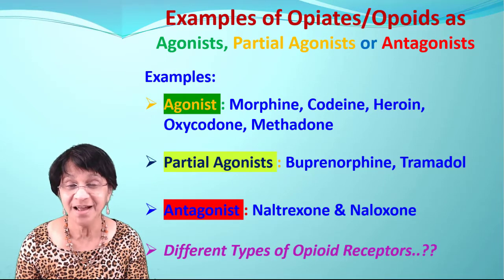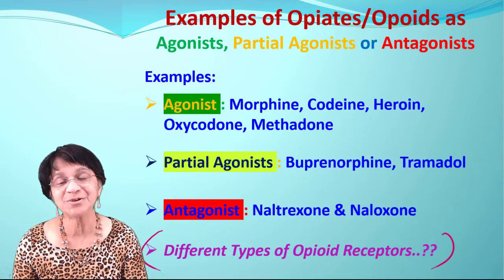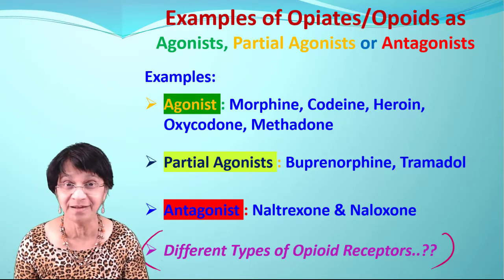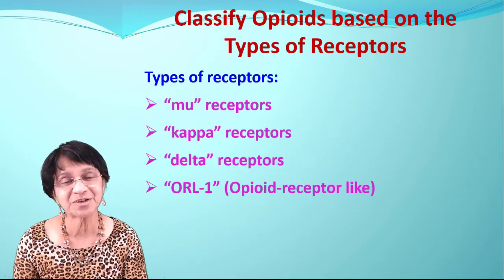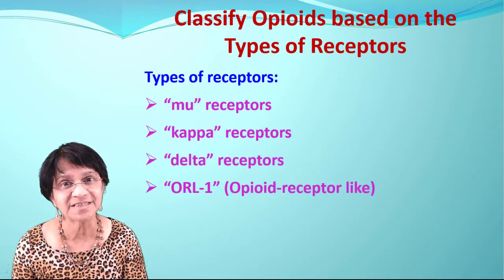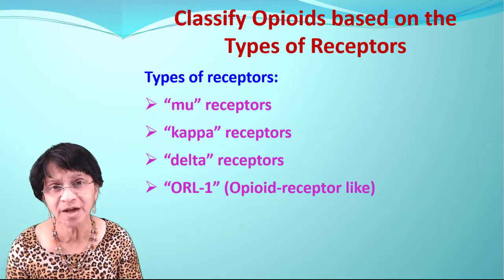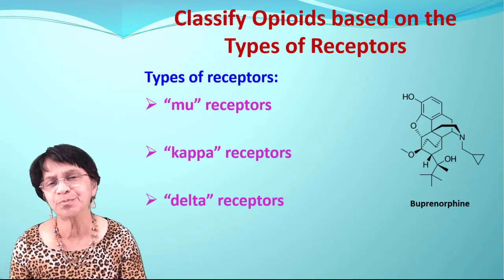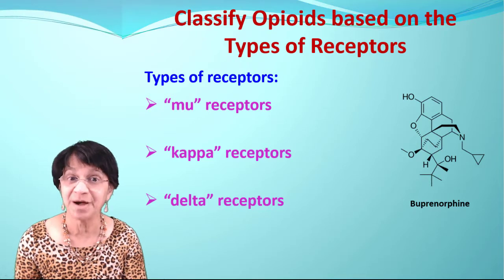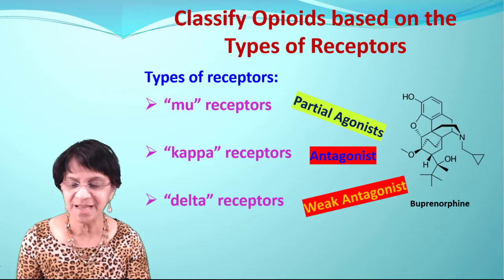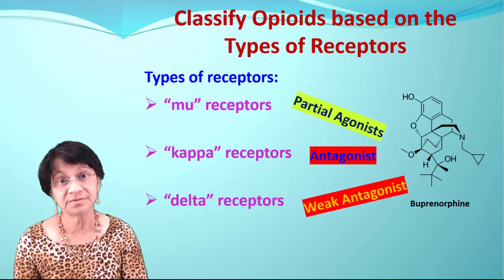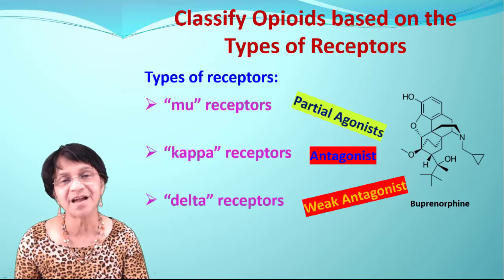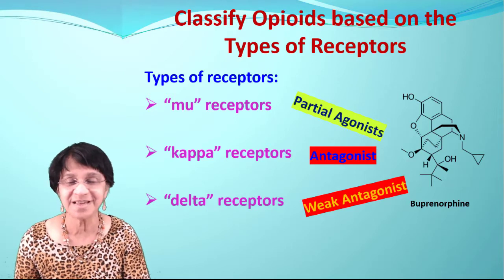Opiate receptors come in different types, and we can classify opiates and opioids based on those receptor types. The known receptor types are mu, kappa, delta, and ORL-1. For example, buprenorphine — a partial agonist overall — is a partial agonist at the mu receptor, an antagonist at the kappa receptor, and a weak antagonist at the delta receptor. There is a lot to know about opiate receptors and how different compounds interact with each one.